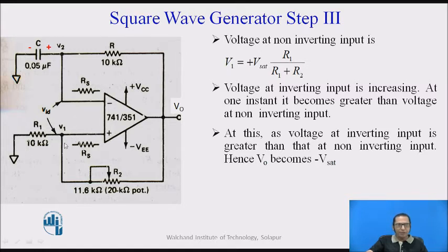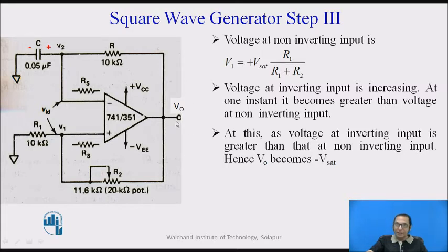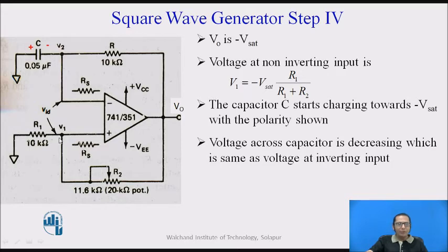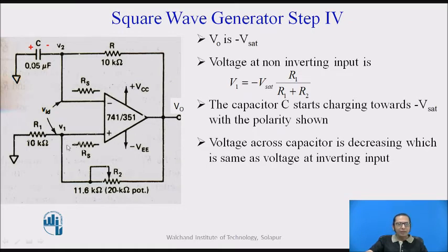When V2 becomes greater than V1, the voltage at the inverting terminal becomes greater than that at the non-inverting terminal. At this instant, the output of the op-amp becomes minus-Vsat. As soon as the output becomes minus-Vsat, the voltage at V1 can again be found by the voltage divider rule: V1 = minus-Vsat × R1 / (R1 + R2), which is a negative voltage.